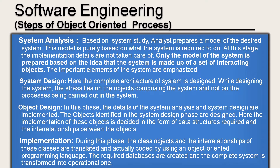In system design, the complete architecture of the system is designed. While designing the system, the stress lies on the objects comprising the system and not on the processes being carried out. In object design, the details of the system analysis and system design are implemented. The objects identified in the system design phase are designed. Here, the implementation of these objects is decided in the form of data structures required and the interrelationships between the objects.